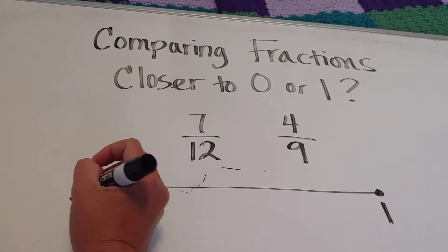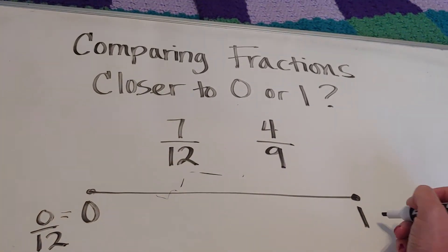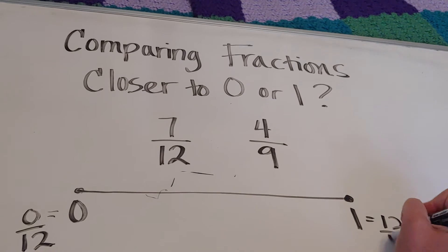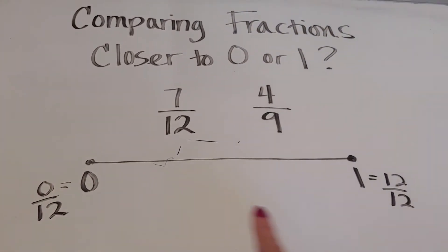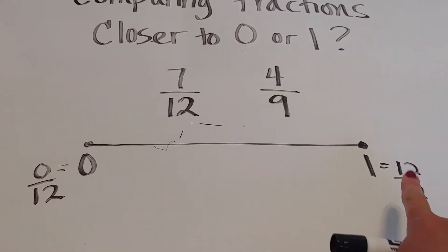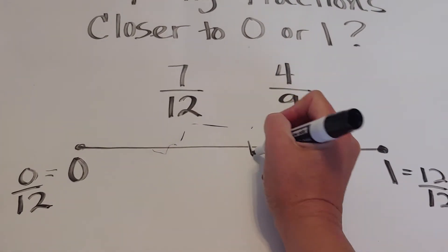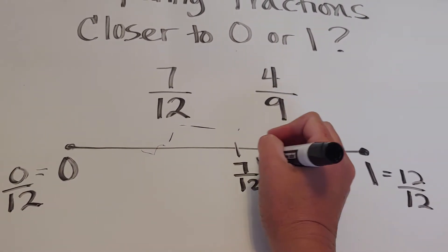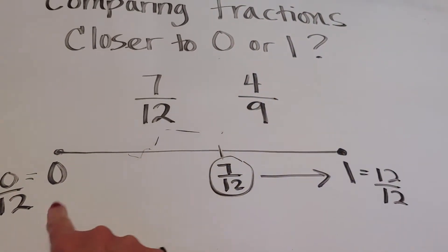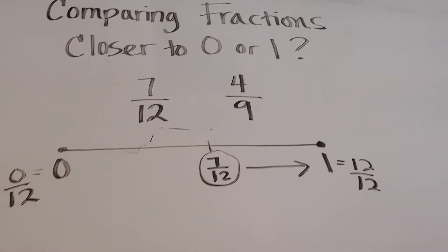This would be twelve twelfths. Is seven twelfths closer to twelve twelfths or zero twelfths? Seven twelfths is going to be somewhere over here, closer to the one side than to the zero side.